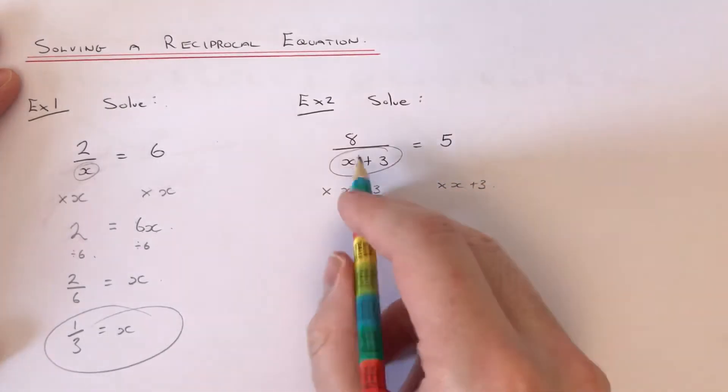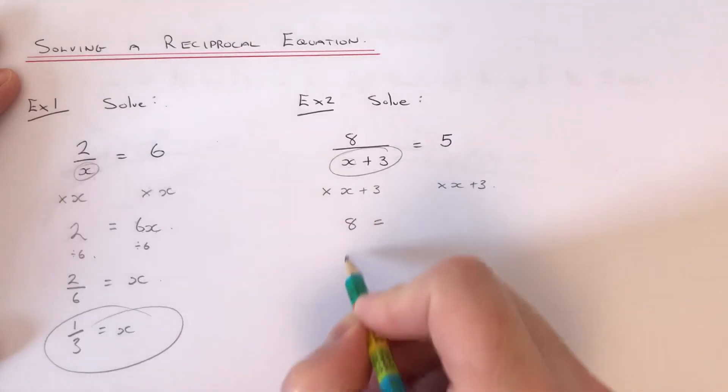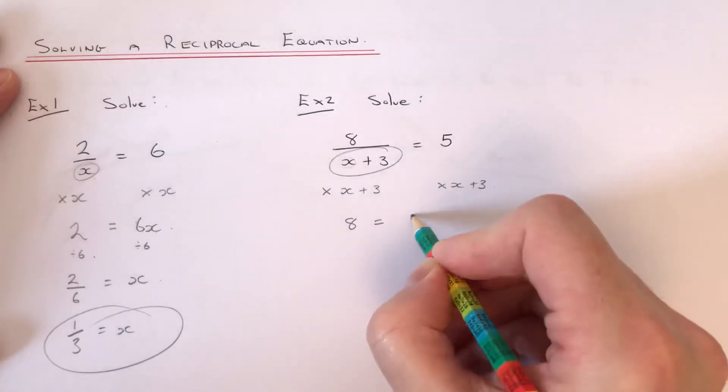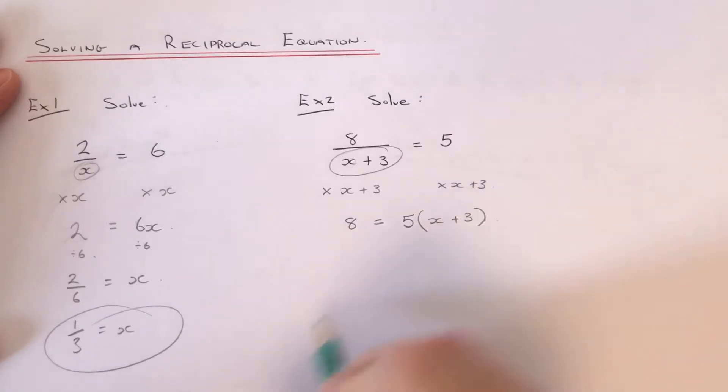So this will cancel off the x plus 3 on the left hand side and leave 8. And on the right hand side, we're going to have 5 bracket x plus 3.